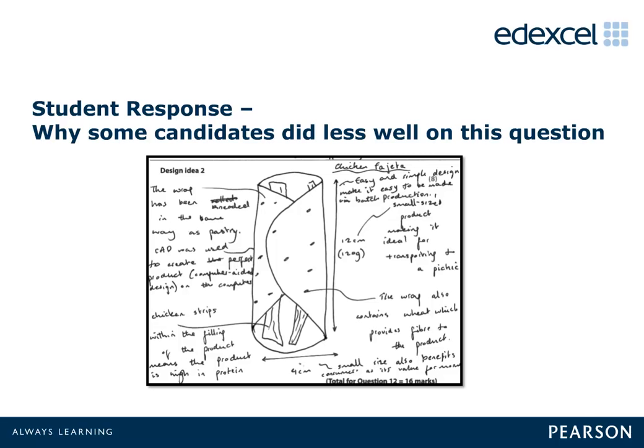2. Finishing technique: this was well answered with the most common response being glazes, egg or milk, and/or scoring on the outer crust for decoration. 3. High in protein: well answered by most candidates with meat, cheese, fish and eggs the most common responses. 4. Suitable for batch production: varied responses with a lot of candidates gaining zero marks. When answered correctly, standard components was the most common answer.